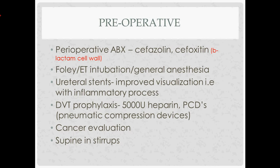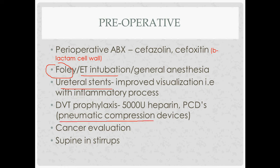Pre-op setup: use a cephalosporin as the antibiotic. Insert a Foley catheter to decompress the bladder, making it smaller to reduce injury risk and thickening the detrusor wall. ET intubation is standard. Ureteral stents can be placed if visualization of the ureters is a concern. DVT prophylaxis uses compression devices on the calves and heparin. Ensure the patient is up to date on cancer evaluation, including a pap smear within the last three months and a mammogram if age-appropriate.